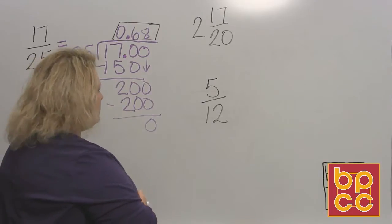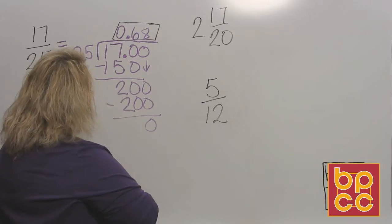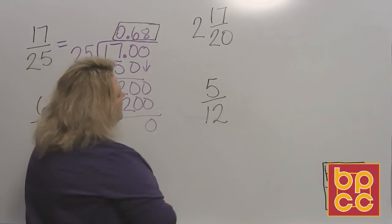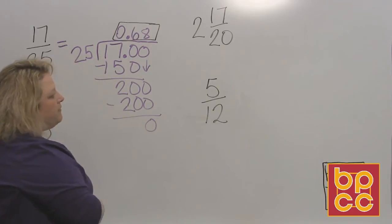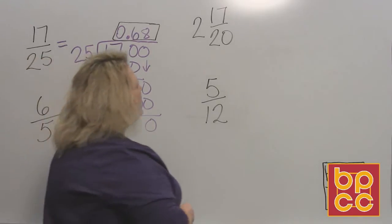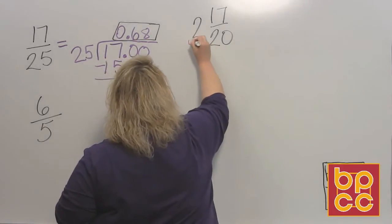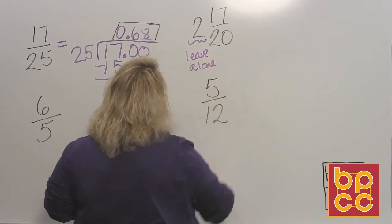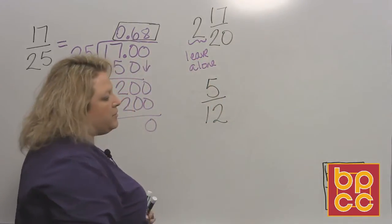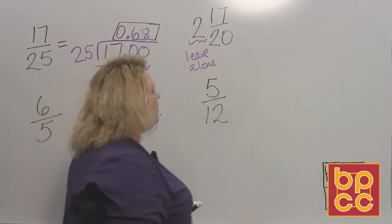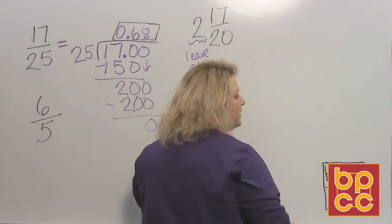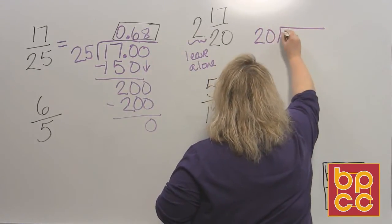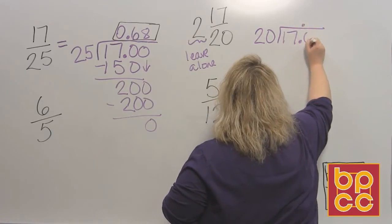So 17 over 25, 17 twenty-fifths, is 68 hundredths, 0.68. All right, so let's go to the next one over here, 2 and 17 twentieths. Now, this 2 right here is a whole number, so we're going to leave him alone. We're going to leave it alone for now, and we'll come back to it in a minute. The main thing that I care about is the fraction part, 17 over 20, so I'm going to do just what I did in the previous one. I'm going to divide. 20 goes on the outside, 17 goes on the inside, and I put my little decimal point, add me some zeros.